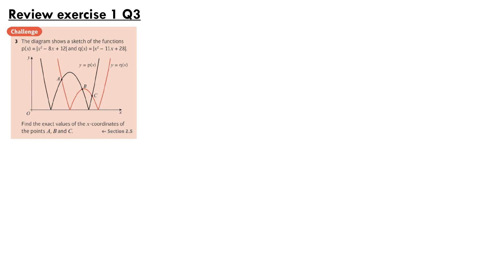Finally, question 3. The diagram shows a sketch of p(x) equals the modulus of (x squared minus 8x plus 12) and q(x) equals the modulus of (x squared minus 11x plus 28). We're asked to find the exact x-coordinates of points A, B, and C. Thinking about whether the quadratics inside the modulus signs are positive or negative at each of those points should help us find the right equations to solve.